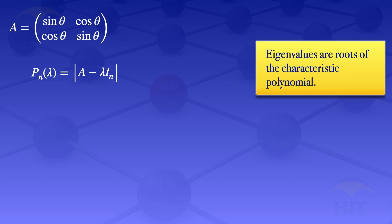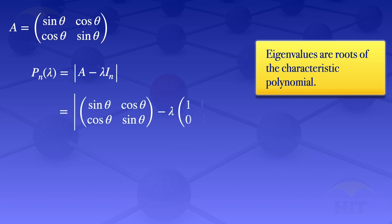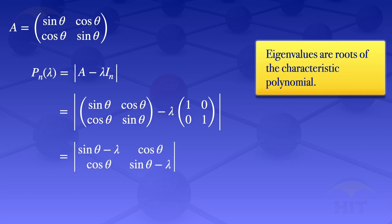If we substitute our A and the 2×2 identity matrix into the formula for P_n(λ), we get the determinant of A minus λ multiplied by the identity matrix. The identity matrix has 1s on the diagonal, so multiplying by λ and subtracting from A results in subtracting λ from the diagonal elements of A. So the result is the determinant of the matrix: sin θ − λ, cos θ, cos θ, sin θ − λ.